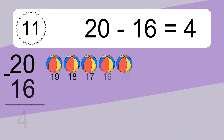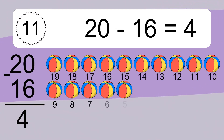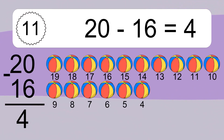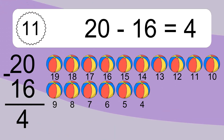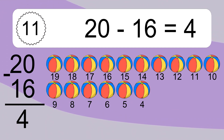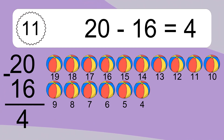20 minus 16 equals what? 20 minus 16 equals 4. Let's count it. 19, 18, 17, 16, 15, 14, 13, 12, 11, 10, 9, 8, 7, 6, 5, 4.